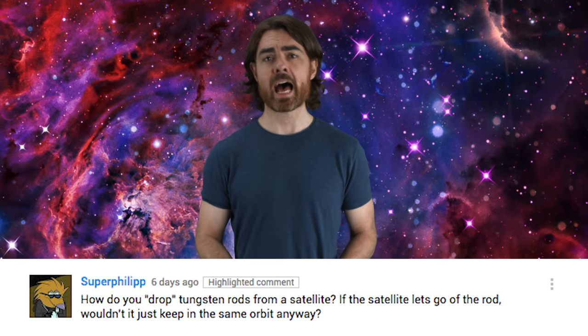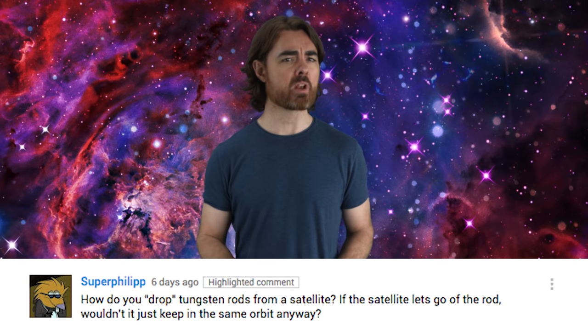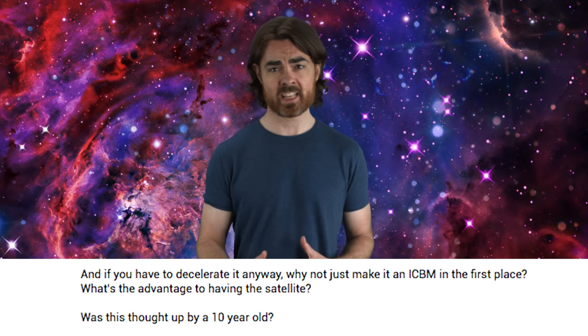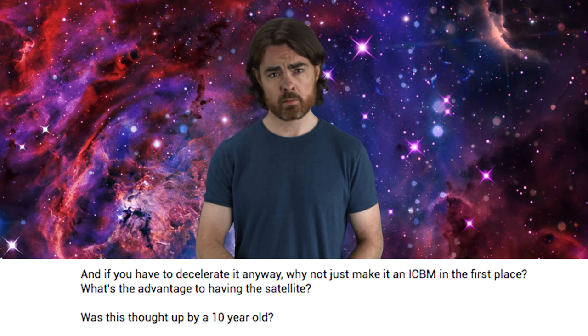Last week we talked about the history and danger of space militarization. You guys had some great comments. SuperPhilip asks how you drop one of these Project Thor tungsten rods. Surely it would retain the same orbit as its satellite. Well, good point. It would. In fact, you need to give it at least a little nudge to send it towards the ground. But that nudge is far less powerful than whatever you need to launch to orbit. Therefore, it's far less detectable.